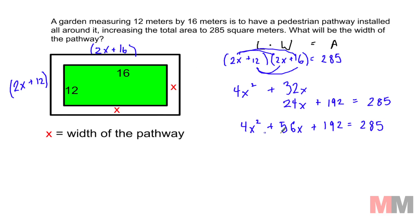I really don't want to sit here and factor it. This is a quadratic equation. So my last resort when I don't want to factor, let's just put it in the quadratic formula. It's not in standard form yet. So you're going to want to equal it to 0 by subtracting 285 on both sides. Now you got 4x squared plus 56x minus 93 equals 0.